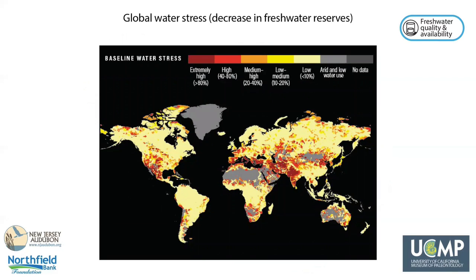The quality of human life is dependent on the availability of clean, fresh water for drinking, sanitation, and agriculture. Our water reserves come from groundwater, lakes, and rivers, which are replenished through rainfall and snowmelt. Unfortunately, to meet the needs of growing populations, these reserves are being used faster than they are being replenished, which causes water stress as seen in the map. Climate change exacerbates water stress by increasing the frequency and duration of droughts.